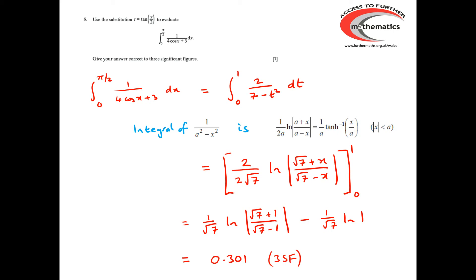For the marking of this question: two marks for carrying the substitution out, another two marks for simplifying down to the point where the original integral equals 2 over (7 minus t²), then a mark for making use of the standard integral, and two marks for evaluating the integral correctly.